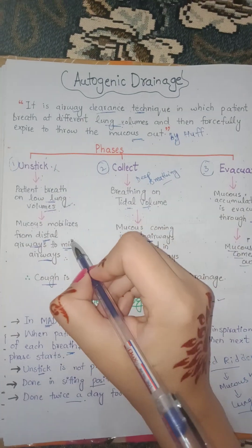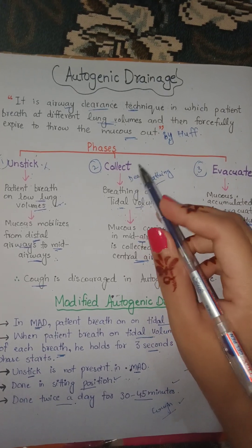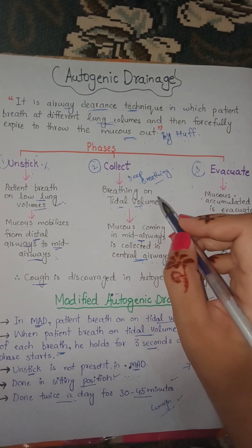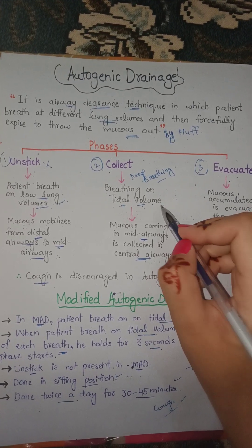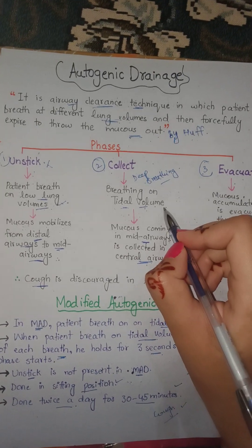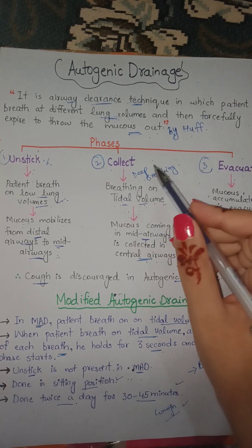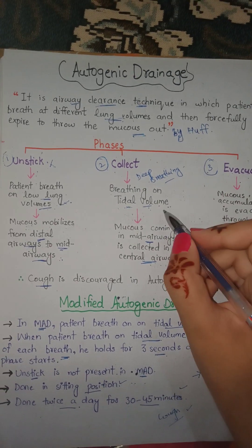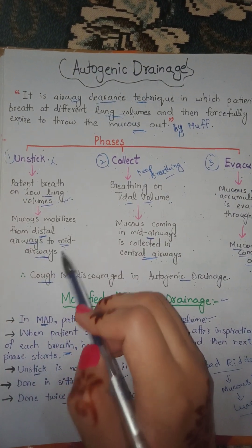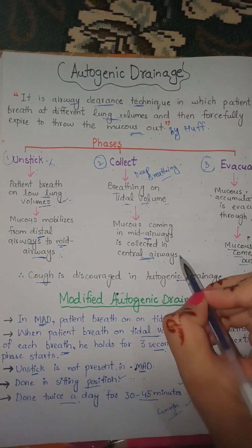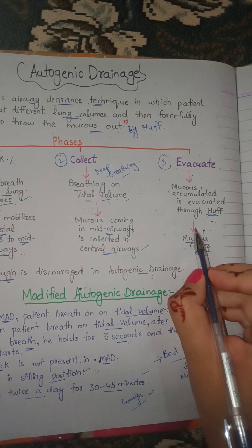In the collect phase, the patient breathes at tidal volume — that is, the maximum capacity of the lungs — essentially taking a deep breath. By breathing at tidal volume, mucus coming into the mid airways is then collected in the central airways.